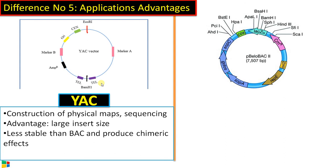But the problem with YAC is it is less stable than BAC and produces chimeric effects. There can be some deletions in the cloned sequence. There can be some inversions in cloned sequence. So there are some problems with YAC vector. At the beginning, human genome project started with YAC, then because of these problems shifted to BAC vector.